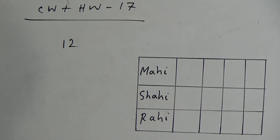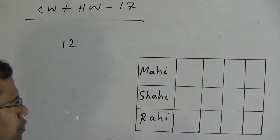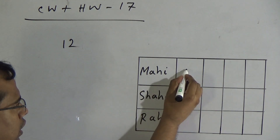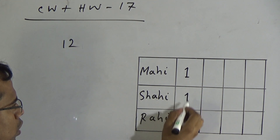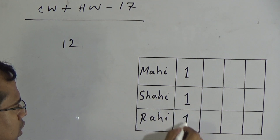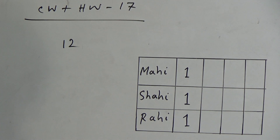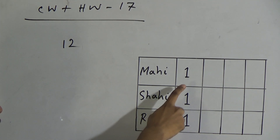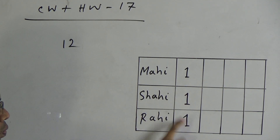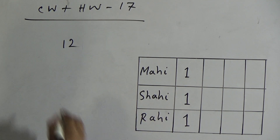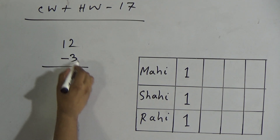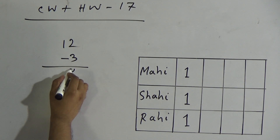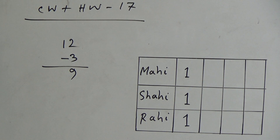In the first stage, I will give 1 chocolate to Mahi, 1 chocolate to Shahi, and another 1 chocolate to Rahi. That means, in the first stage, total 1 plus 1 equals 2, and 2 plus 1 equals 3 — I have given 3 chocolates. So now I have 12 minus 3 equal to 9 chocolates.